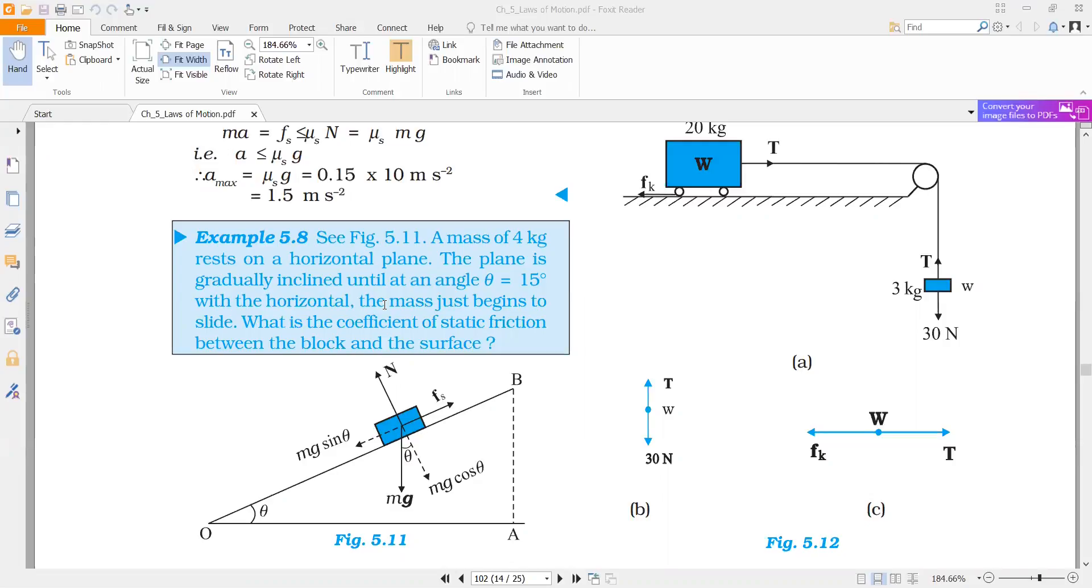Now tan of angle of repose, that is 15 degrees, can be solved using trigonometry. We rewrite this as tan of 45 minus 30.